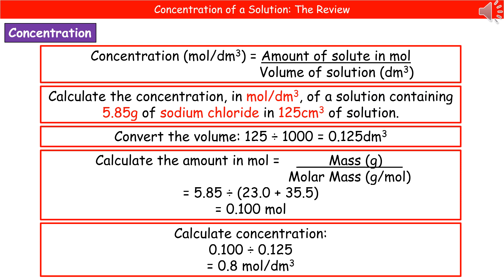Once we've got that, we can divide our 5.85 by our molar mass of sodium chloride. And that will give us our amount in moles, which is 0.100. The last thing to do then is to calculate the concentration. We've got the amount in moles. We've got the volume in decimeters cubed. All you now do is divide the amount in moles by the volume. So 0.1 divided by 0.125 gives us 0.8 moles per decimeter cubed.